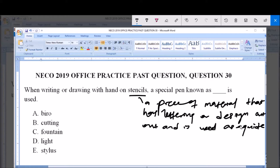Pattern, design, or print produced. Now, the question says when writing or drawing with hand on stencils, a special pen is known as dash is used. The special pen used for writing on stencils to make lettering or designs is the fountain pen.